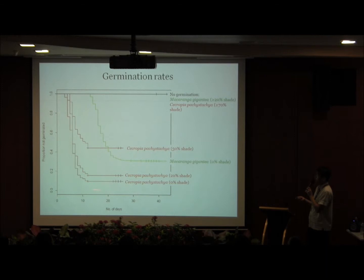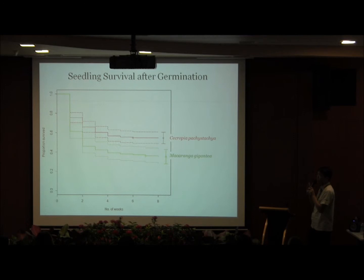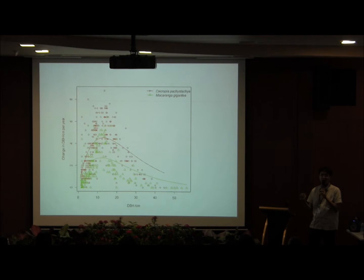At 0% shade, Cecropia has a much higher germination rate than Macaranga. Macaranga takes a few days to germinate while Cecropia germinates almost immediately. Cecropia can also germinate at half shade, while Macaranga cannot germinate even at 20% shade. Even after germination, Cecropia seedlings have a higher survival rate than Macaranga. Looking at trees of 1 cm DBH and above, Cecropia grows faster than Macaranga at all size classes. Because it grows faster, it also reaches reproductive maturity earlier — at perhaps 3 to 5 years — while Macaranga takes more than 5 years.